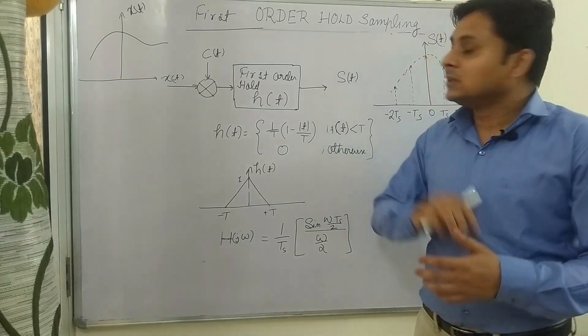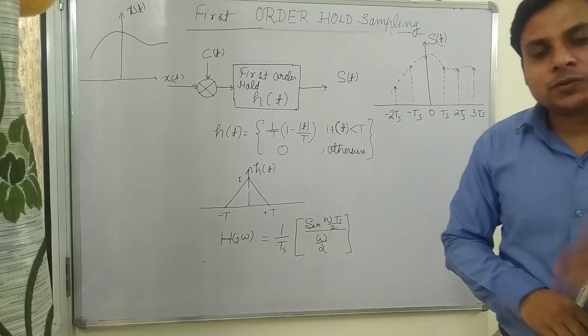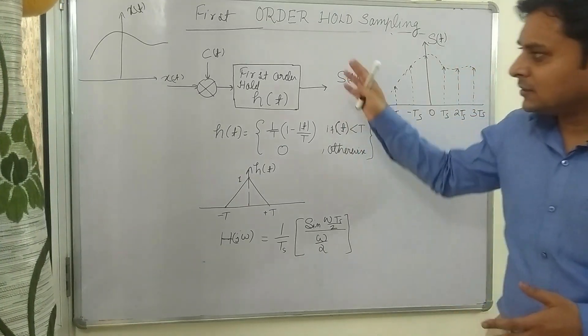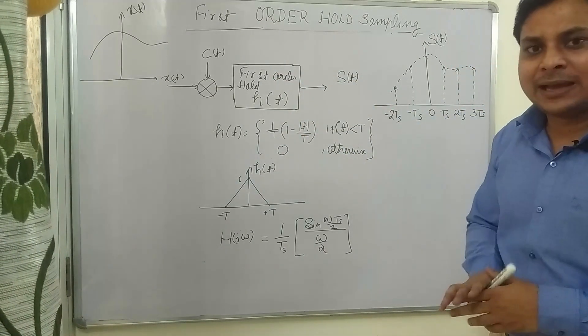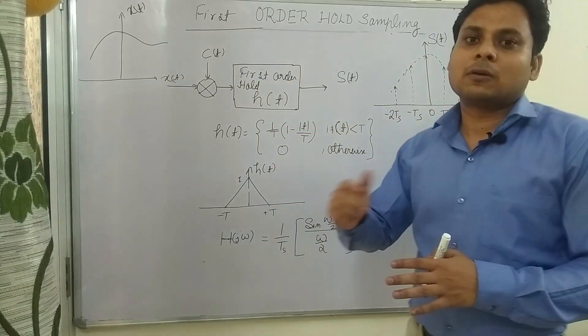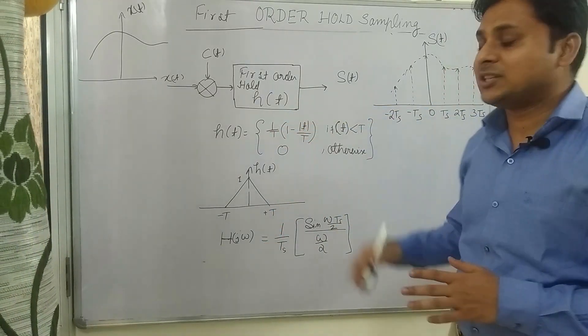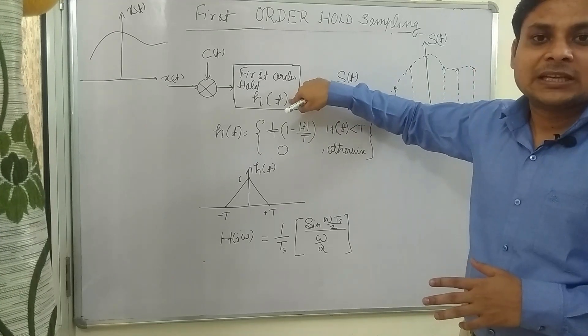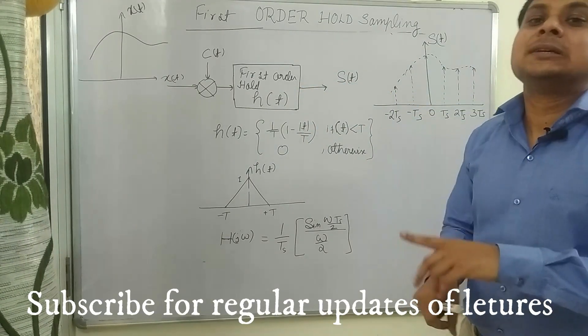first-order hold sampling technique. This block diagram is before you and it is similar to the zero-order hold sampling technique. The only change is h(t), the impulse response. We have used a